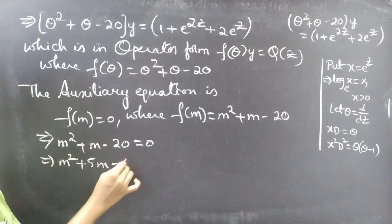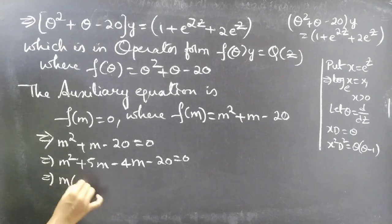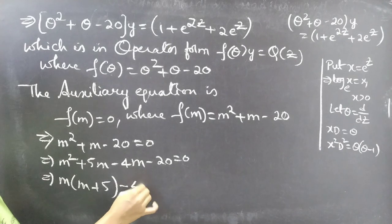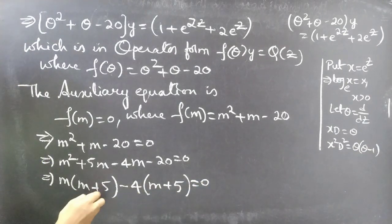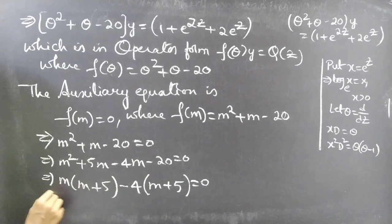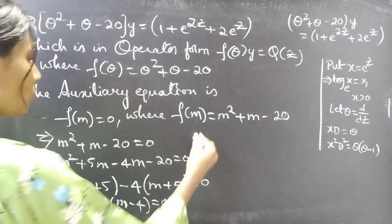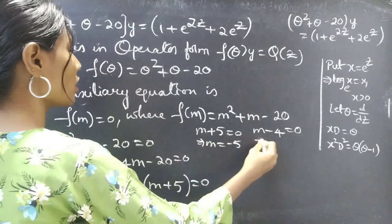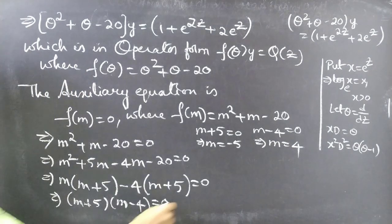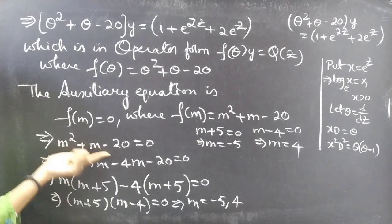Let's write plus m as plus 5m minus 4m. Take m common from the first two terms and minus 4 common from the next two terms. We get m times m plus 5, minus 4 times m plus 5 equals 0. Taking m plus 5 common, we get m plus 5 into m minus 4 equals 0. Therefore m equals minus 5 and m equals 4, which are real and distinct roots.